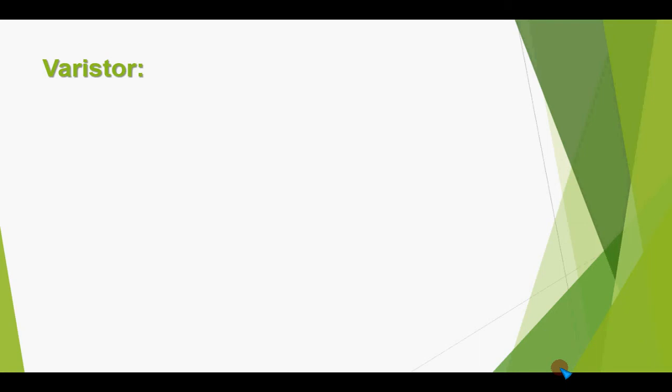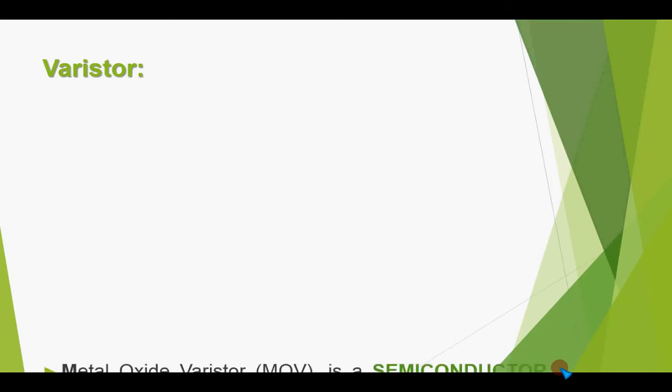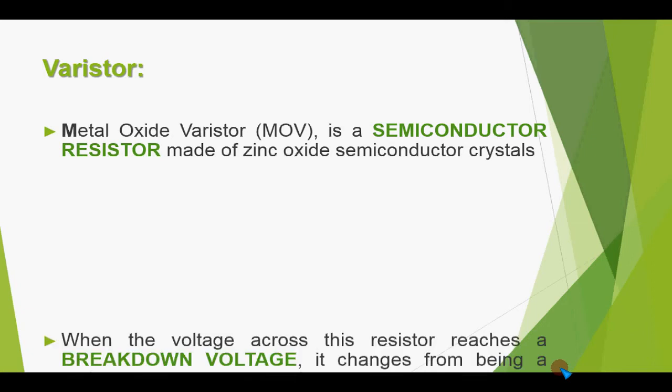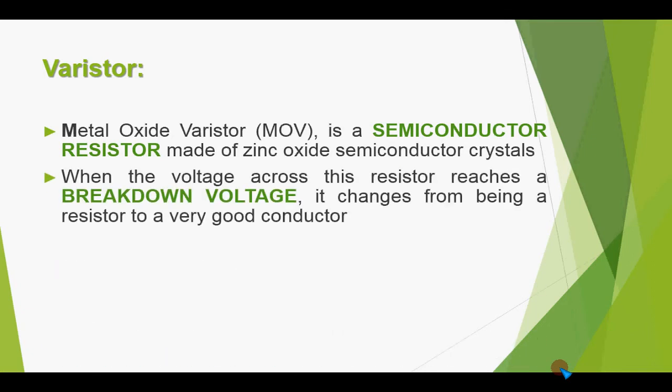Our today's topic is the varistor. What is varistor? These are the metal oxide varistors, also called MOV, is a semiconductor resistor made of zinc oxide semiconductor crystals. When the voltage across this resistor reaches to a very high voltage level that are called the breakdown voltages, it changes from being a resistor to a very good conductor.